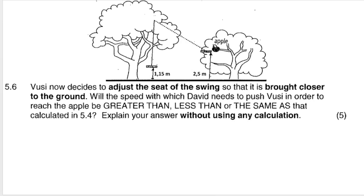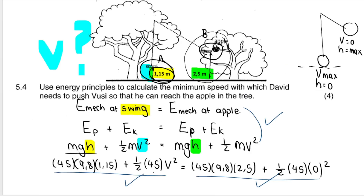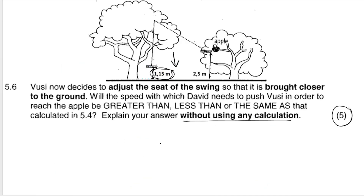The last question is a thinking question — five marks. Vusi now decides to adjust the seat of the swing so that it's brought closer to the ground, making the initial height smaller than 1.15 m. Will the speed with which David needs to push Vusi to reach the apple be greater than, less than, or the same? Explain without using any calculations.